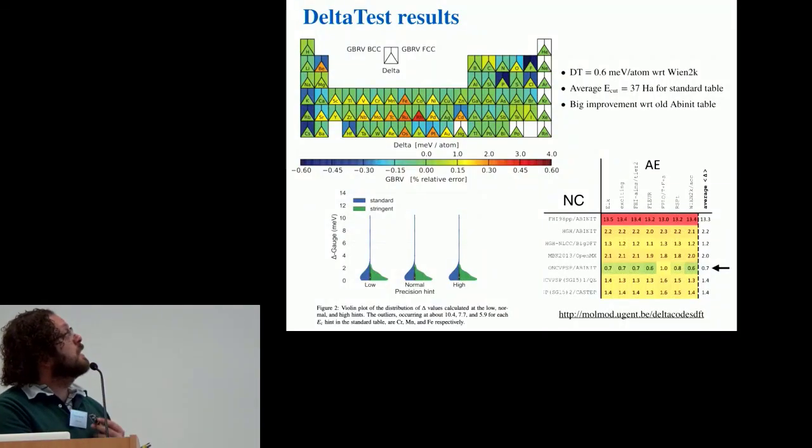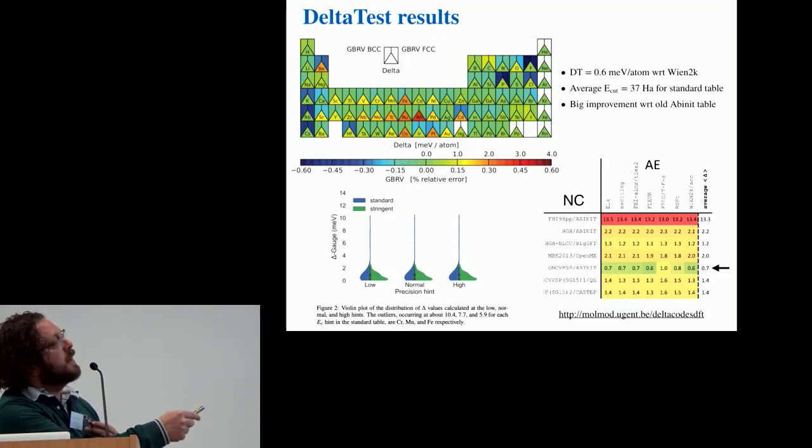These are the results for the delta test reported in this triangle here, and then I'm also showing the relative error for the bcc and fcc from the GBRV benchmark. And for the standard table we obtained a delta factor of 0.6 meV per atom with respect to Wien2k, with an average value for the plane wave cutoff energy of 37 Hartree.